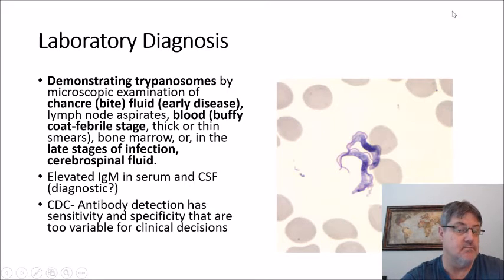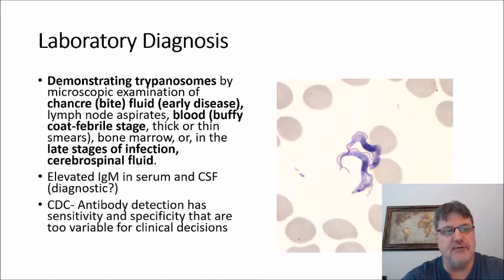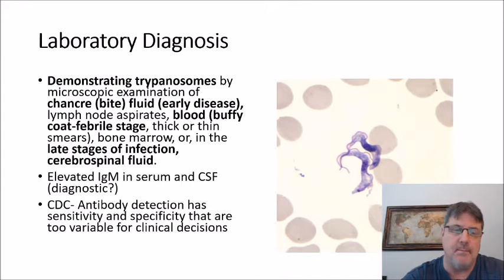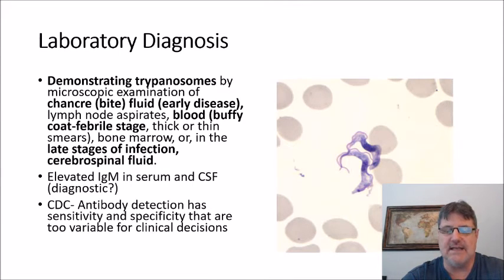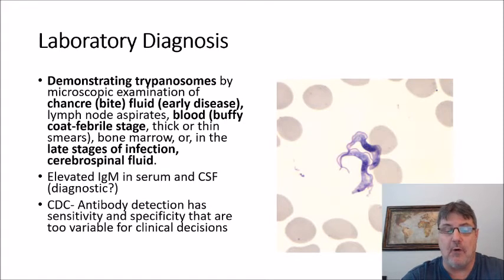For laboratory diagnosis, one way is demonstrating the trypanosomes in an examination of the chancre fluid in very early disease. You can also find the trypanosome in lymph node aspirates, in the blood via thick and thin smears, and in bone marrow. In the very late stages of infection, you can find it in the CSF. An elevated IgM in serum and CSF may be seen. Antibody detection has sensitivity and specificity that are too variable for clinical decisions, according to the CDC.